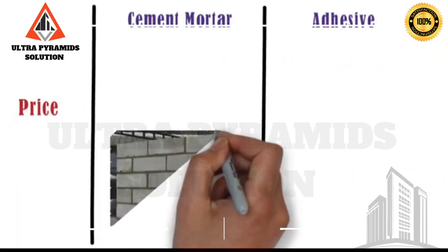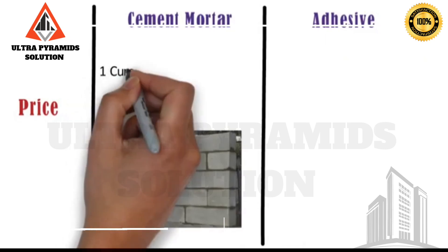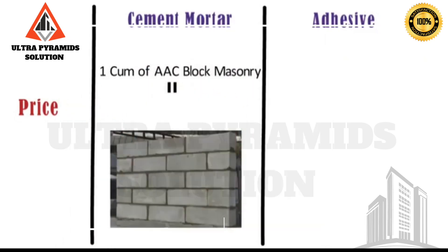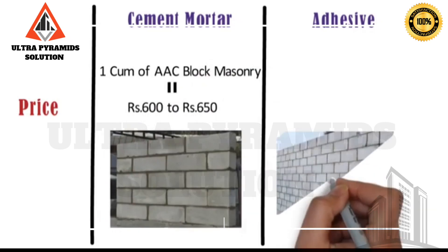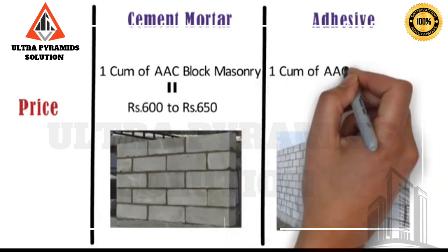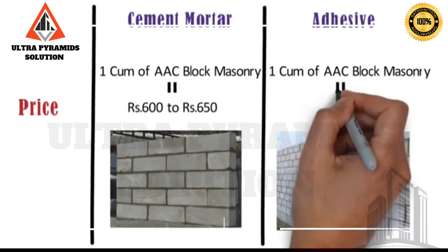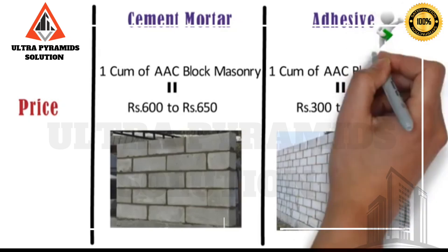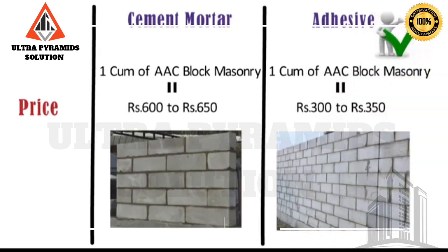Price: The cost of cement mortar for constructing one cubic meter of AAC block masonry is approximately 600 to 650 rupees. Whereas, the cost of adhesives for the same is approximately 300 to 350 rupees. From this comparison, we can say AAC block adhesives has many advantages and is more cost-effective as compared to cement mortar.